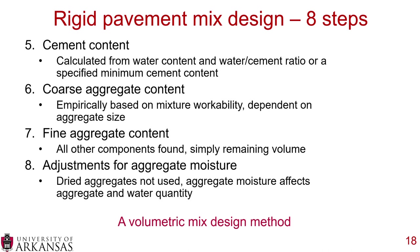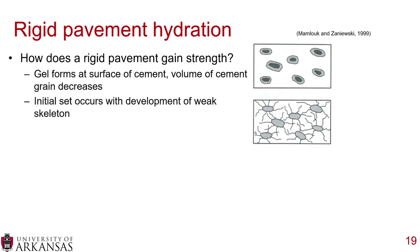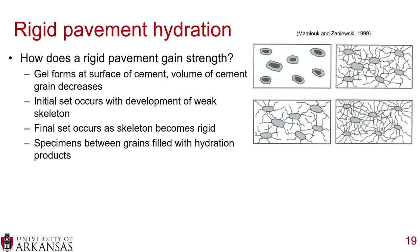Overall, rigid pavement mix design is a volumetric method. Water is critical because it causes the cementitious material to hydrate and gain strength. Hydration proceeds as a gel forms at the surface of the cement grain — decreasing the grain volume — forming an initial weak skeleton, then a final rigid set as the spaces between grains fill with hydration products.